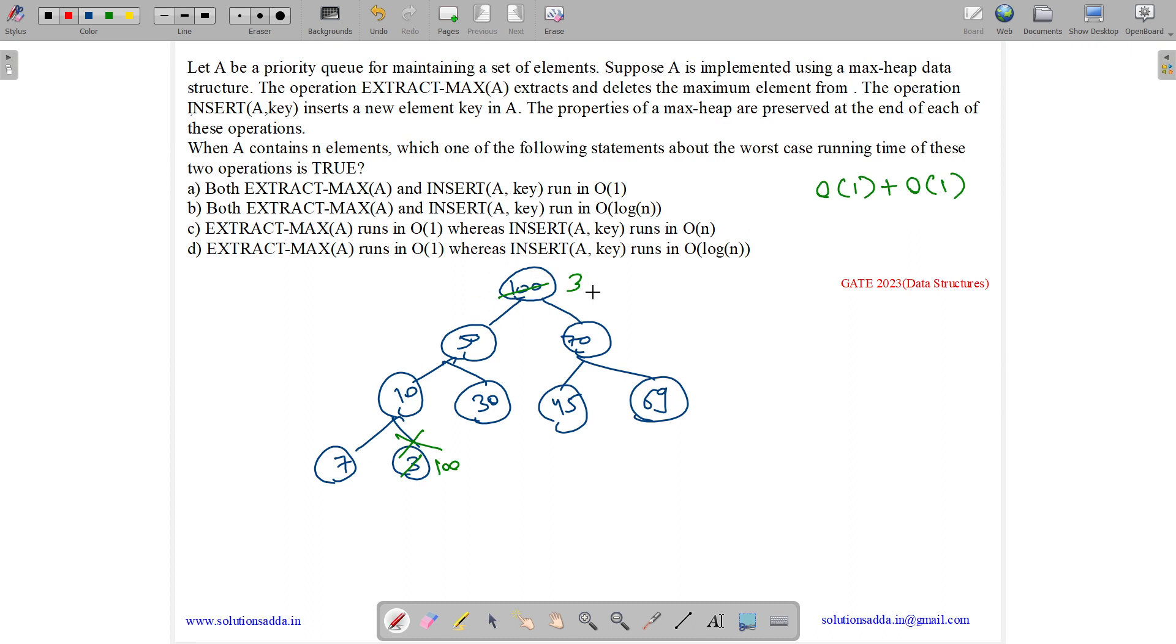See, this max heap is not satisfied here. 3 is less than 50 and 70. In fact, 3 is less than every item in this heap. So we will do the heapify. So in heapify, we will replace 3 by the maximum of its immediate child. So maximum of 50 and 70 is 70. So we replace 70 with 3. Then we will replace 3 with the max. So 69 will come over here and 3 will go over here. See, this is the heapify operation.